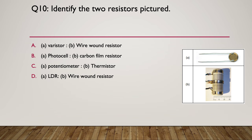Question ten: identify the two resistors pictured — A and B. Is it A) A is a varistor and B is a wire wound resistor, B) A is a photo cell and B is a carbon film resistor, C) A is a potentiometer and B is a thermistor, or D) A is an LDR — light dependent resistor — and B is a wire wound resistor?